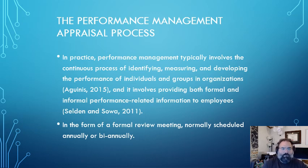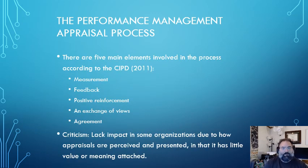Continuing the discussion of the performance management appraisal process: in practice, performance management typically involves the continuous process of identifying, measuring, and developing the performance of individuals and groups in organizations. It involves providing both formal and informal performance-related information to employees in the form of a formal review meeting, normally scheduled annually or biannually. There are five main elements involved in the process according to the CIPD: measurement, feedback, positive reinforcement, exchange of views, and agreement. A criticism is the lack of impact in some organizations due to how appraisals are perceived and presented, suggesting they have little value or meaning.